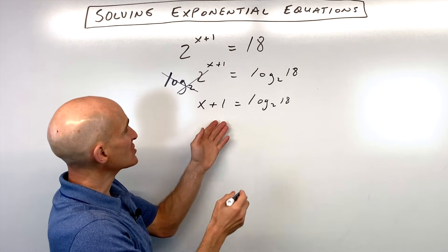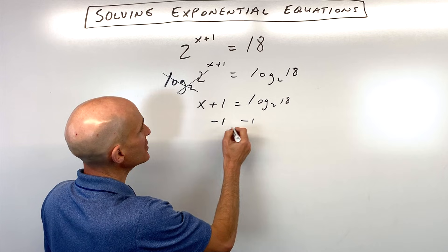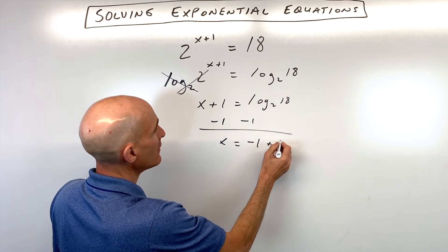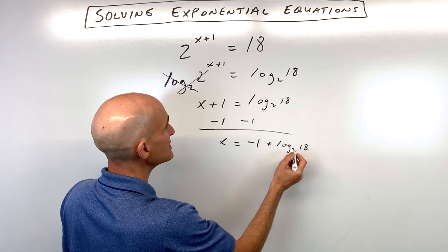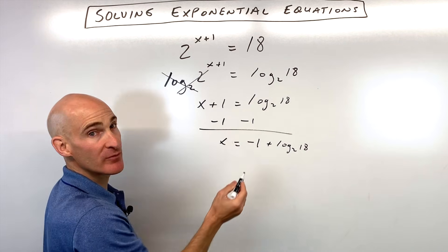Now all we have to do is subtract 1 from both sides of the equation, so we get x equals negative 1 plus log base 2 of 18. Don't make the mistake of subtracting the 1 from the 18.